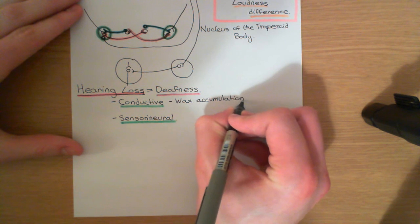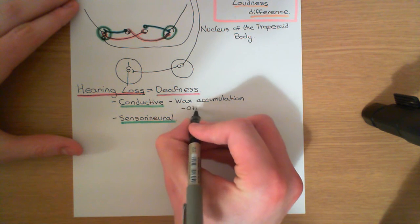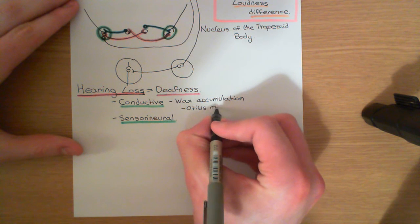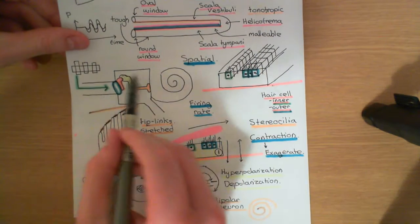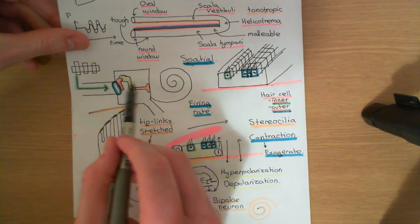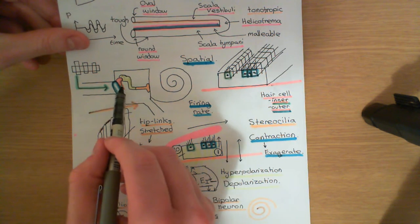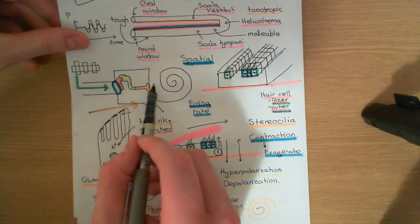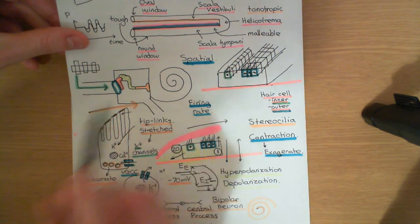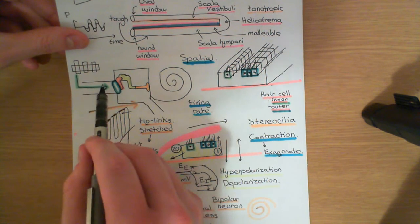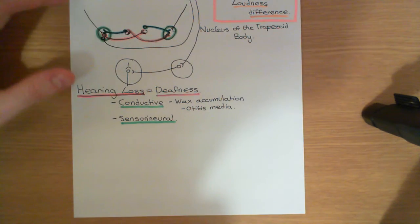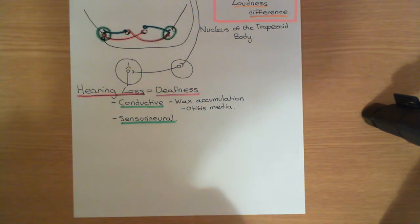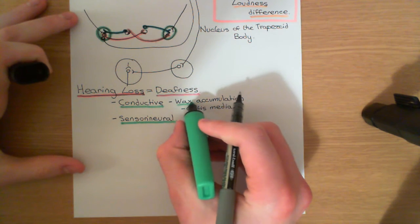Another important example is otitis media. Otitis media means inflammation of the middle ear. If you get inflammation of the middle ear, inflammatory exudate can accumulate inside the middle ear cavity, and this can prevent the ossicles actually conducting the oscillation to the cochlea. So otitis media is another example of a conductive form of hearing loss.